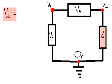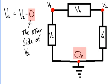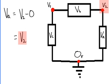Let's do device A. VA equals V2 minus 0, the other side of VA. And that equals V2, because V2 minus 0 is V2.